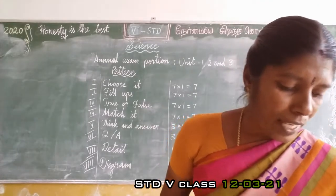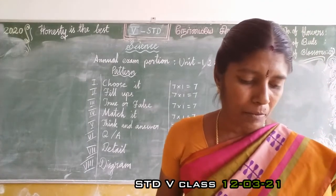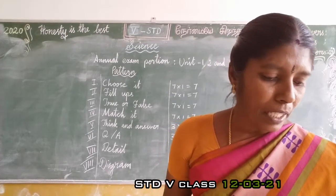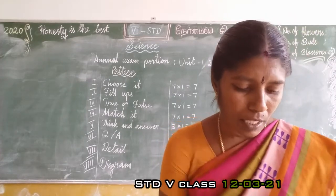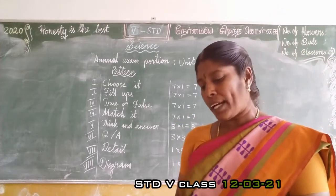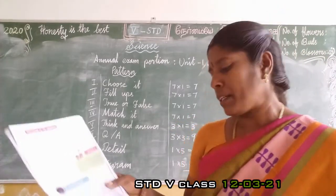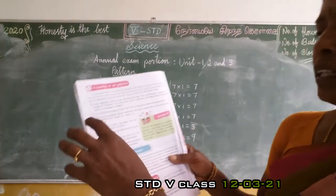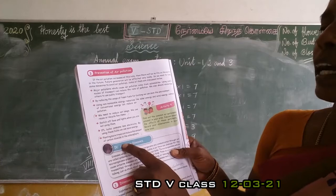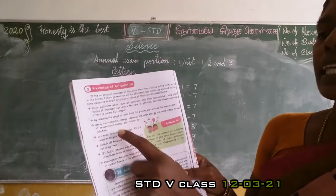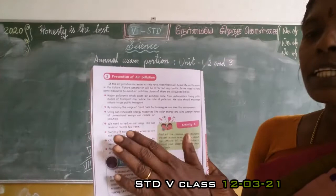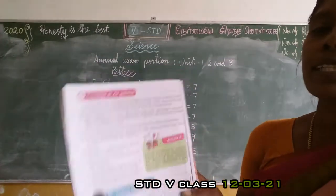Mention two ways of controlling air pollution. Refer to page number 102, where several points are given - seven points are listed. Select any three points that you find easy to write.